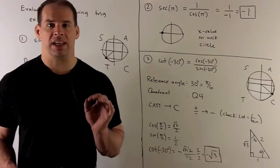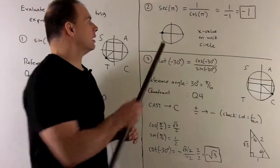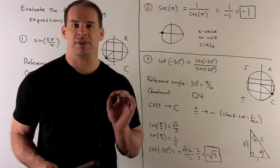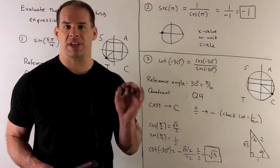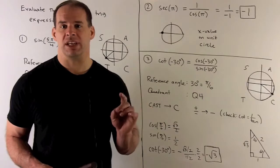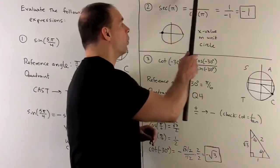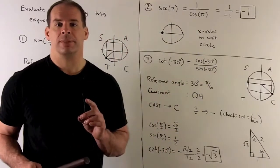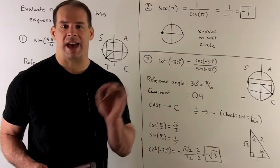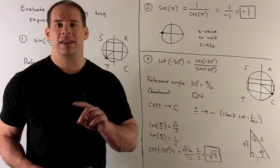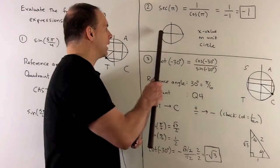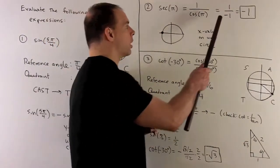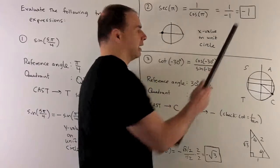Next, we have secant of π. Typically you don't memorize secant off the top of your head, so you want to put this in terms of sine and cosine. Secant is 1 over cosine, so we're looking at 1 over cosine of π. Cosine is the x value of the unit circle. If I plot the angle π, we wind up here, and that x value is −1. So we stick in −1, and our answer is just −1.